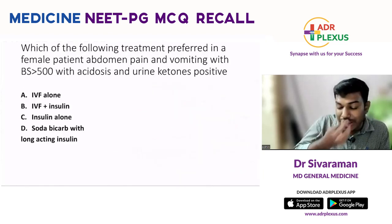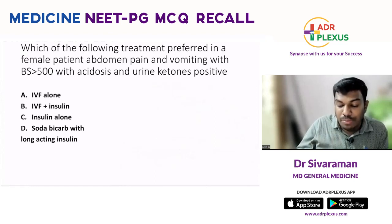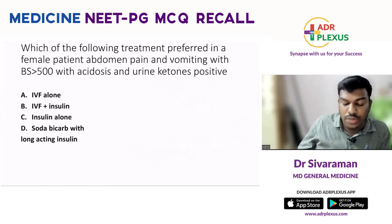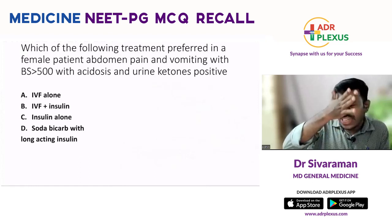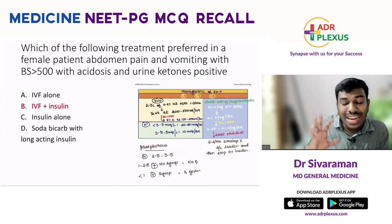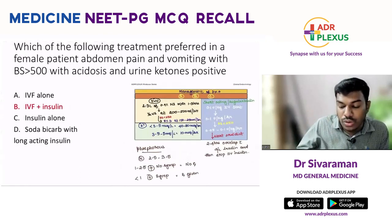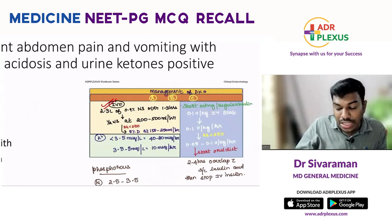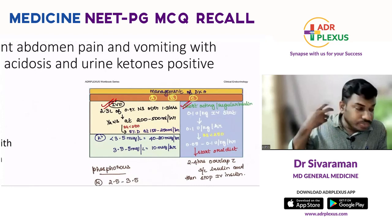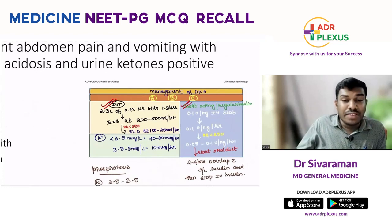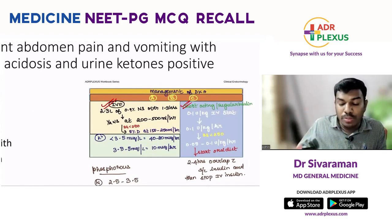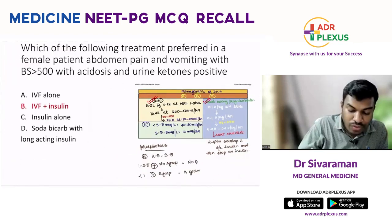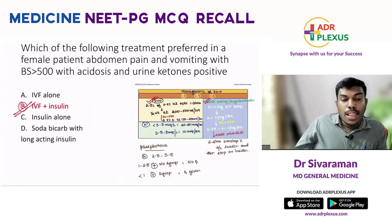Which treatment is preferred in a female patient with abdominal pain, vomiting, blood sugar more than 500, acidosis, and urine ketones positive? Any patient with DKA: first go for IV fluids (IV NS), and concomitantly start regular insulin. Always check potassium level — if potassium is less than 3.3 mEq/dL, correct potassium first, then start insulin. The answer is IV fluid with insulin.